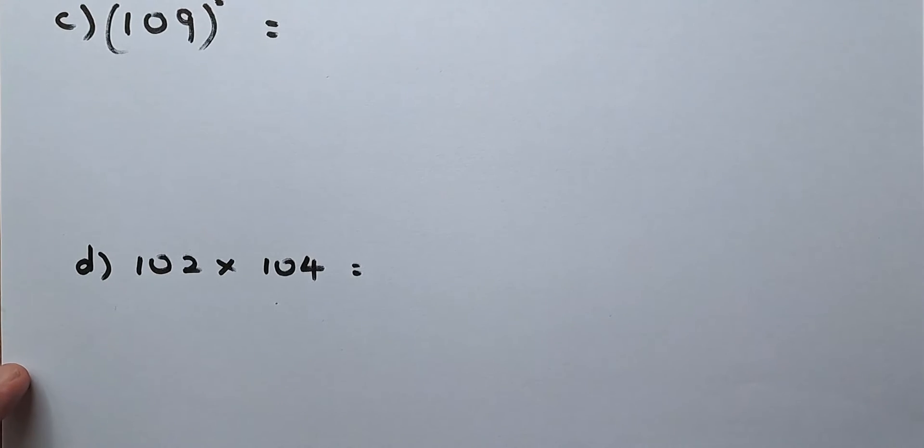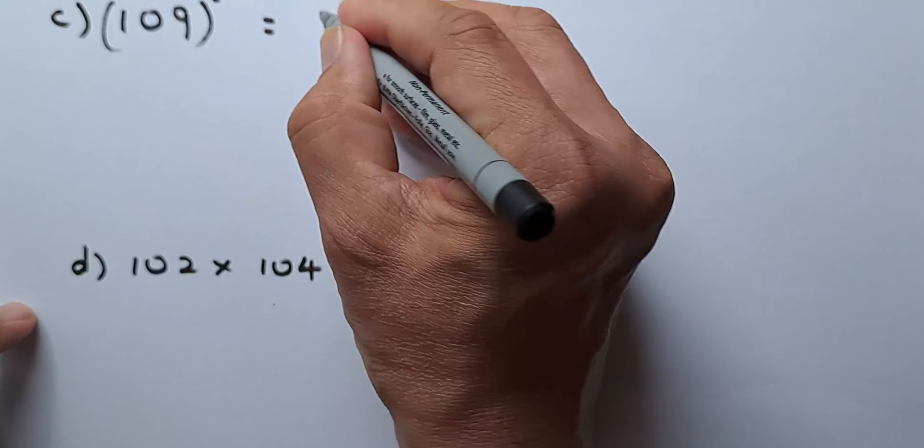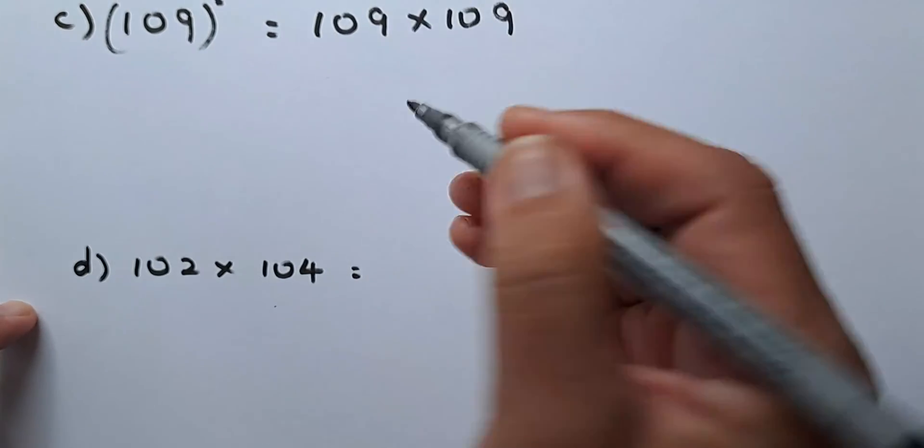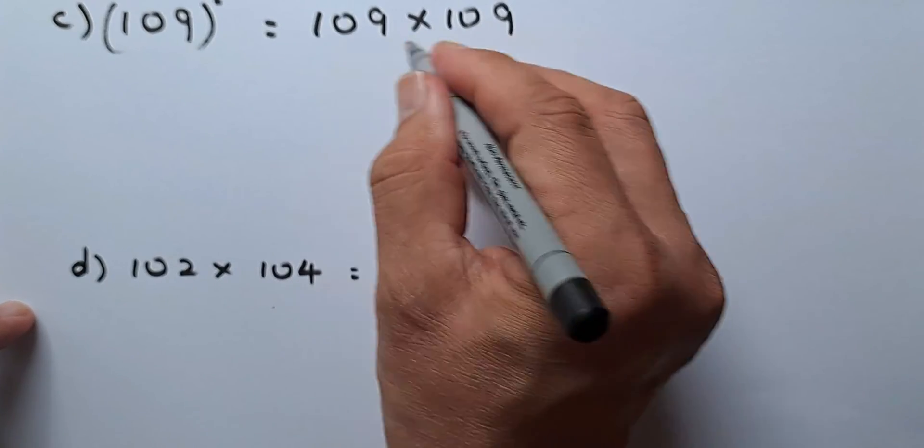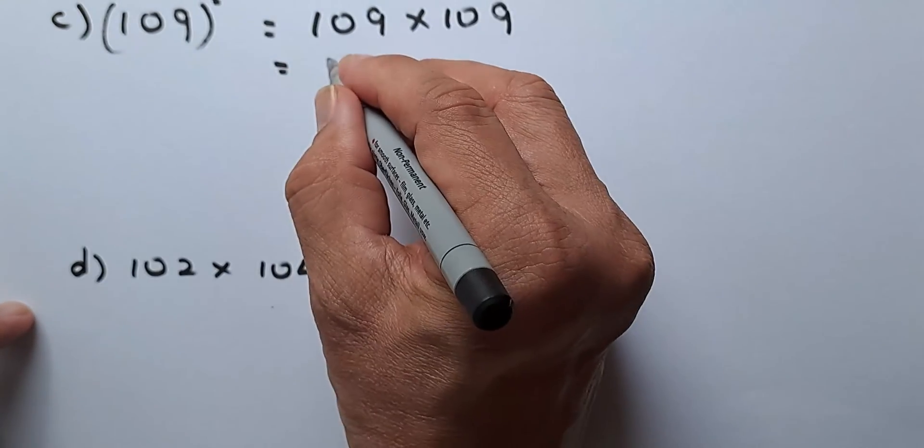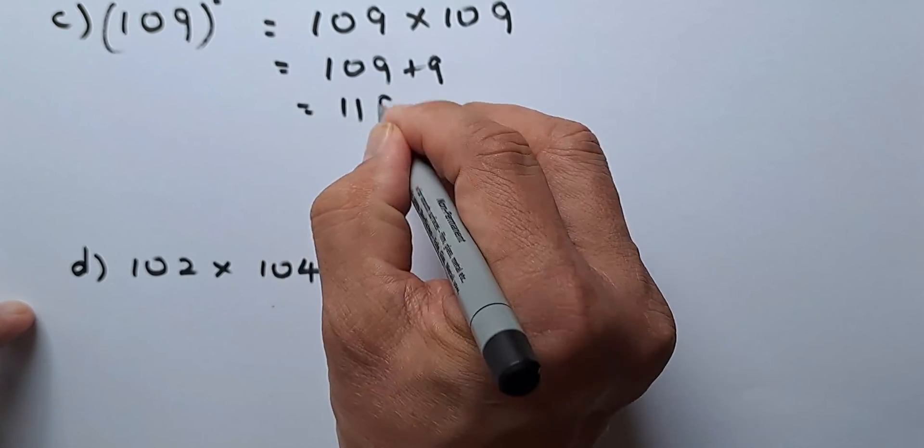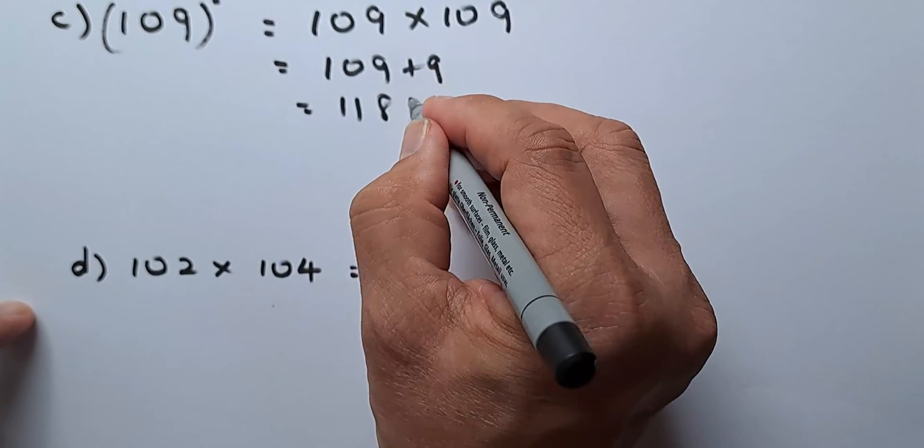Okay, now the last step we're going to do. I'll give you one second to do this. 109 squared is the same as 109 times 109. So the first step, you're going to add 109 plus 9, is going to be 118. And then 9 times 9 is going to be 81.